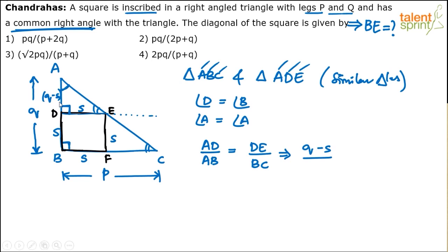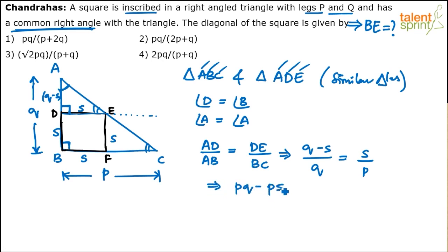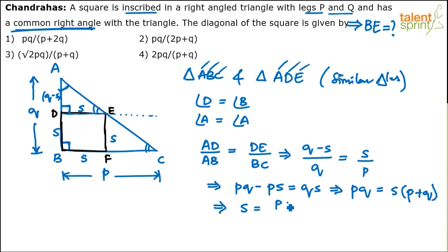Solving for s: cross-multiplying gives p(q − s) = qs, so pq − ps = qs. Bringing s terms together: pq = qs + ps = s(p + q). Therefore the side of the square is s = pq/(p + q).